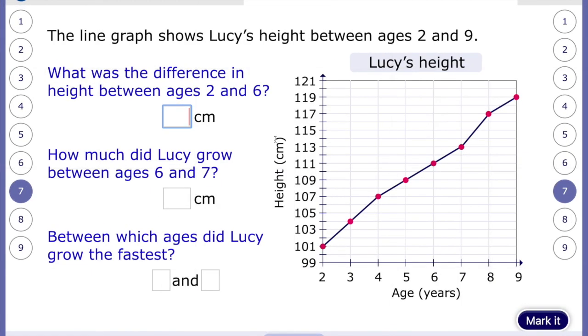It says the line graph shows Lucy's height between the ages of 2 and 9. You can see the time in age, obviously in years along the bottom, and then the height in centimetres along the top. So what was the difference in height between ages 2 and 6? So if we look at the age 2, we read up. We can see at 2, she was 101 centimetres.